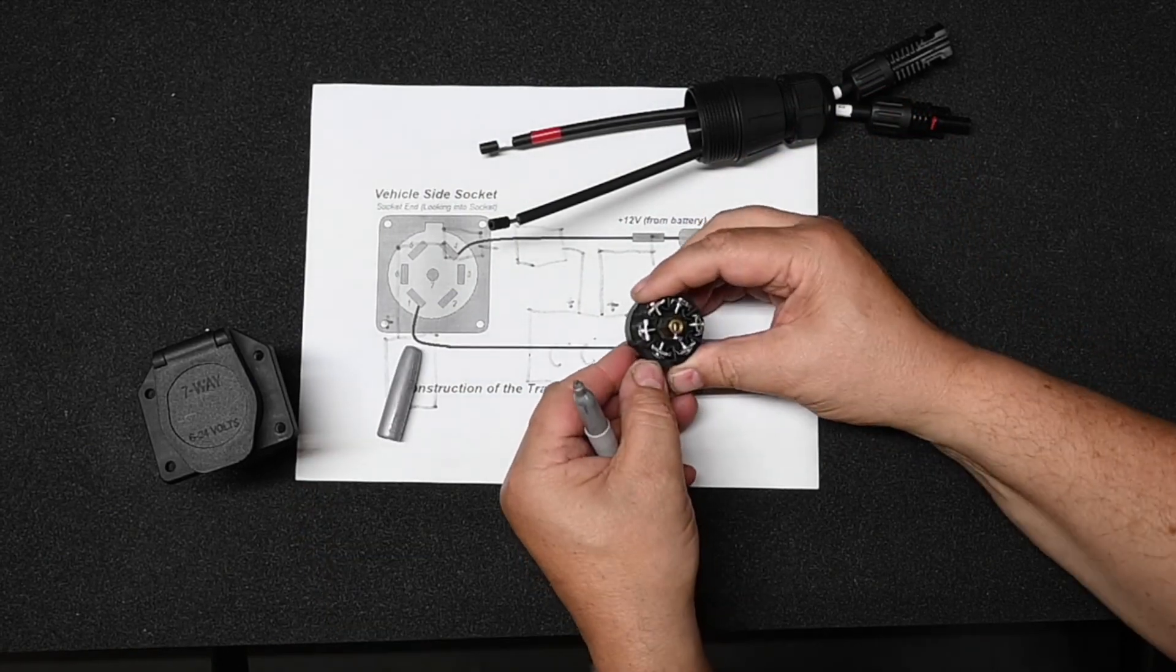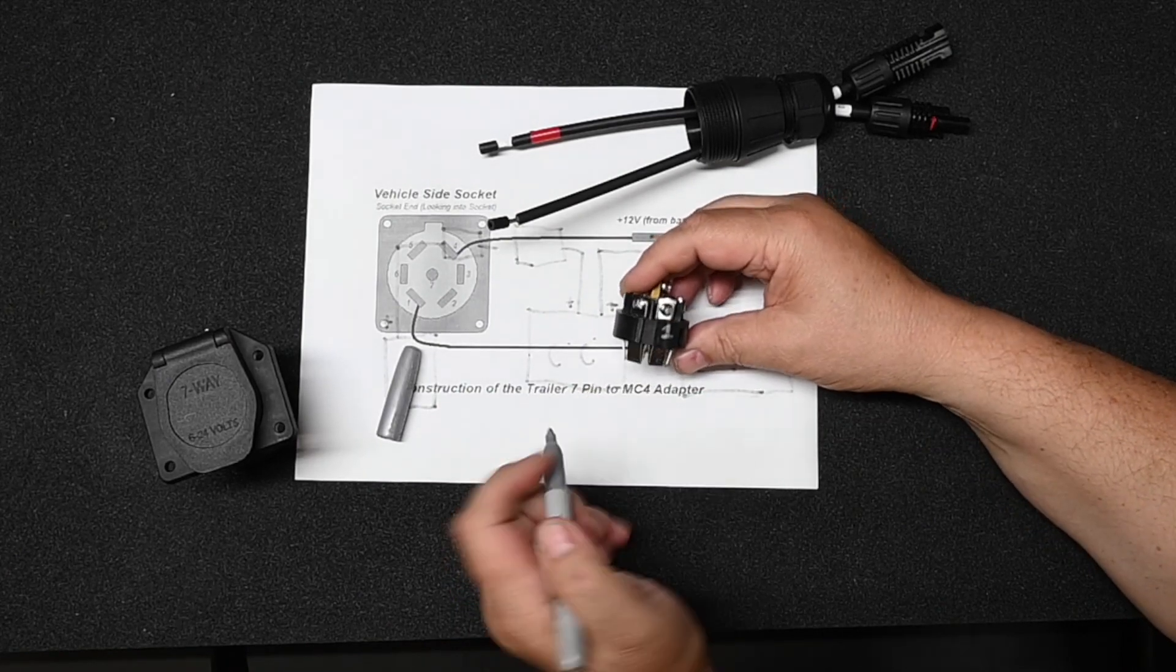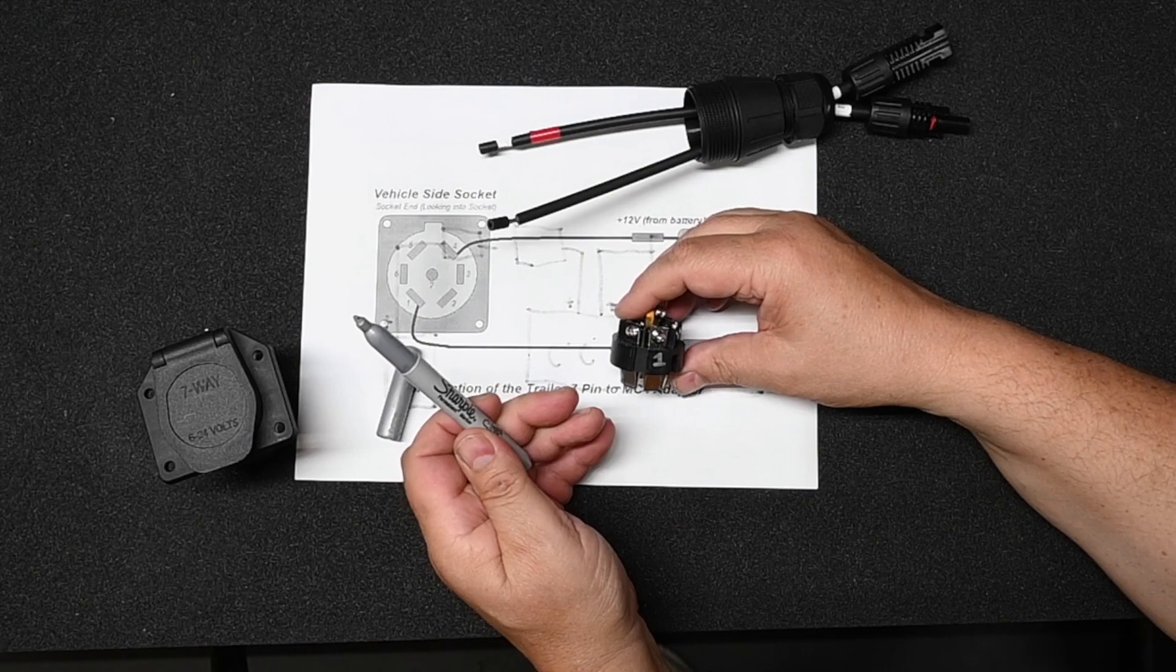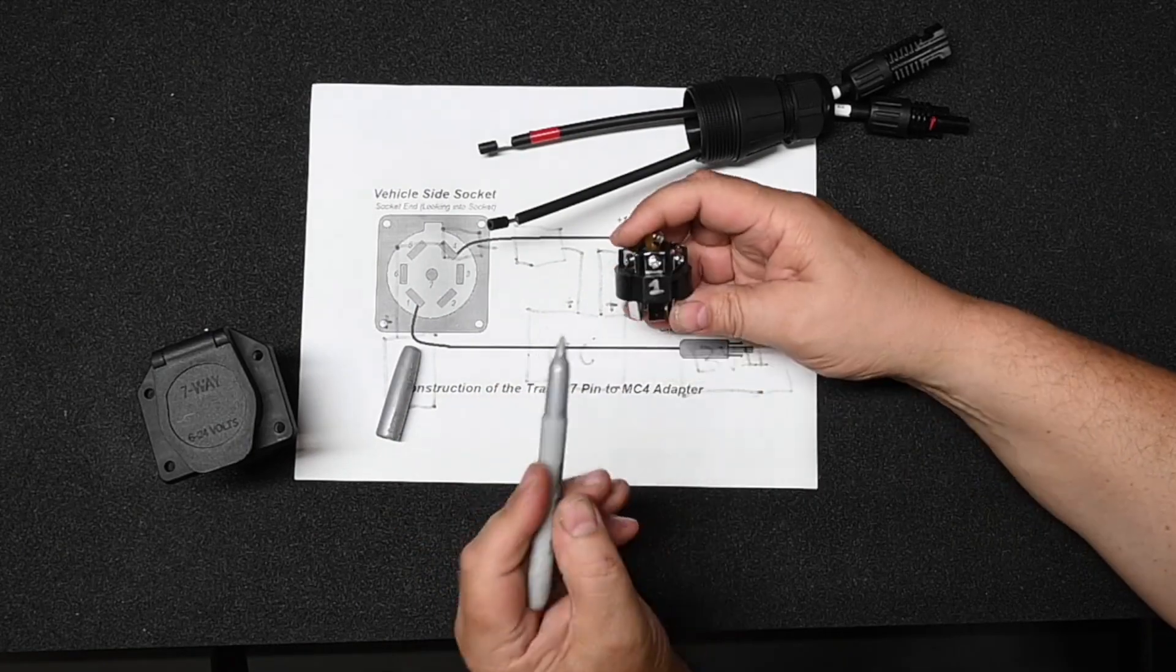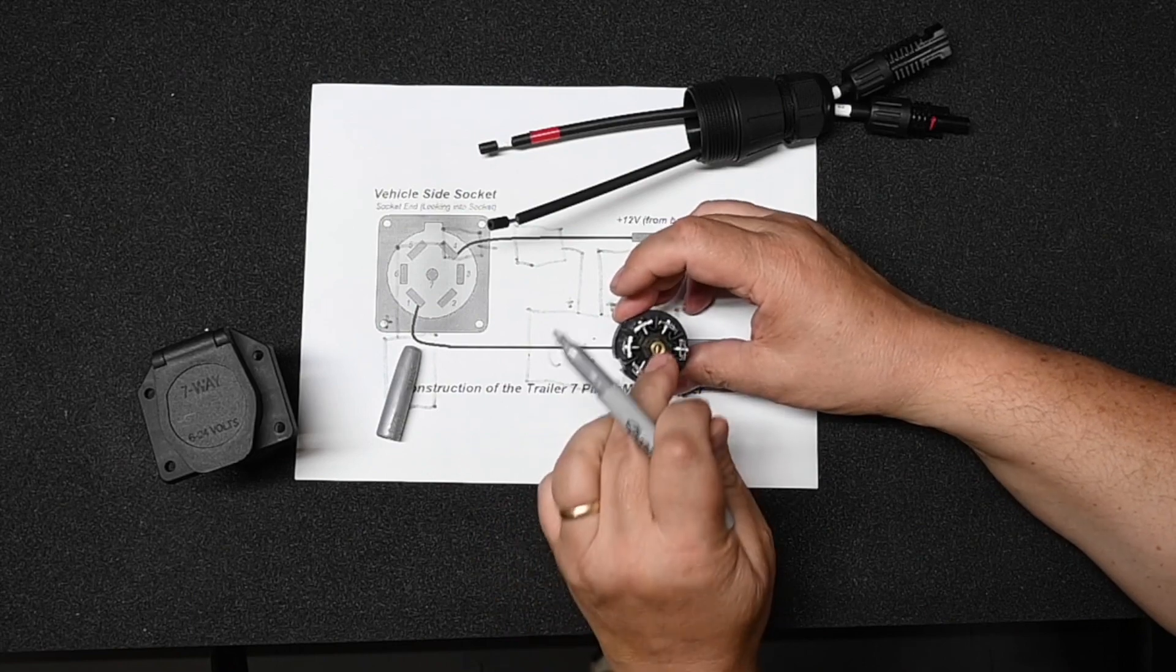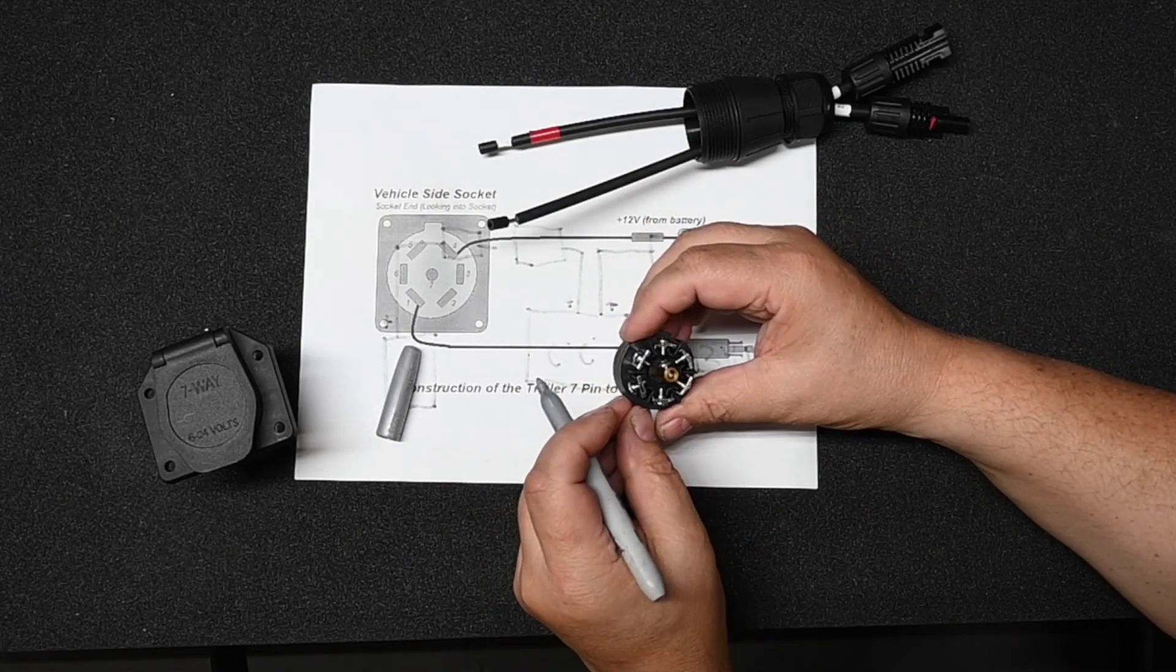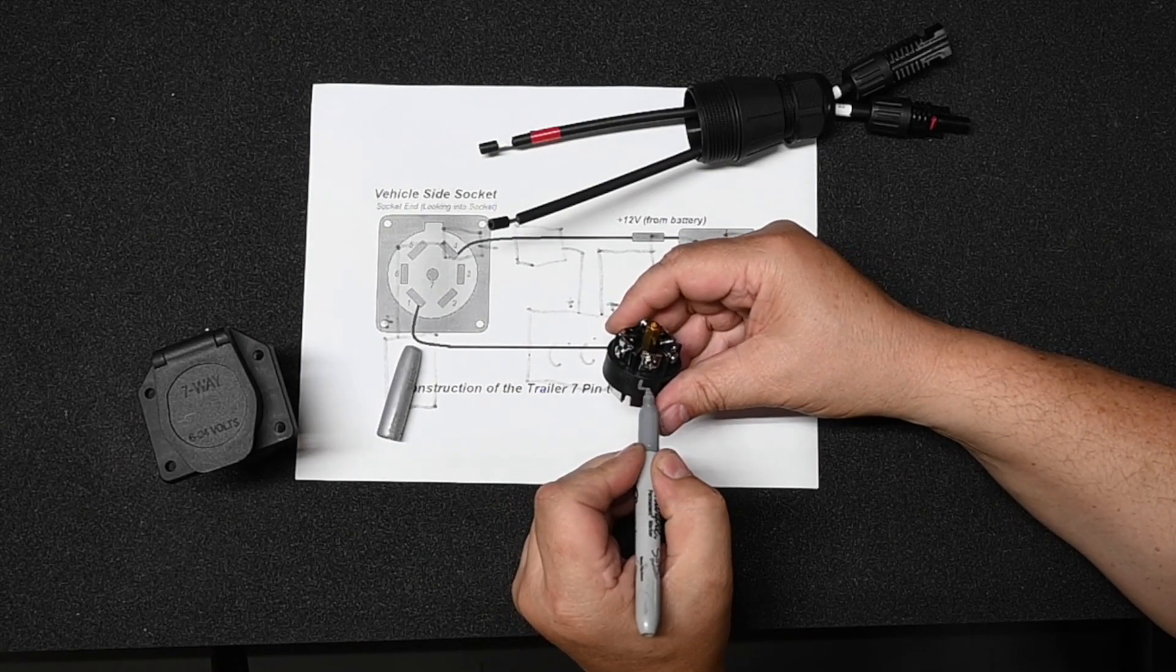And number one ground, I can see that. Just to make it easier to remember, I'm just going to put a one on with a silver Sharpie. And then you can count in a counterclockwise direction when looking at it from this end. Two, three, four. And then you can verify pin four.